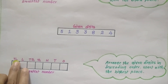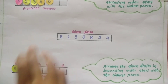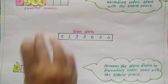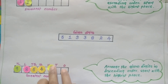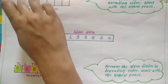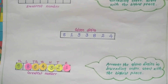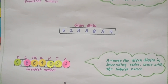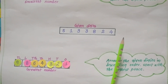First I place the digit 9, then 8, then 5, then 4, then 3, then 2, and at the last 1. So this is the possible greatest number which we have formed by using the given digits.